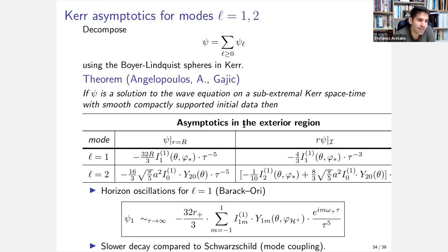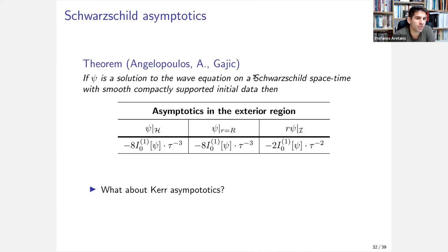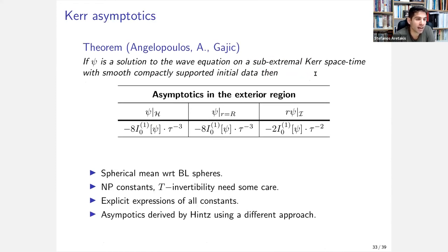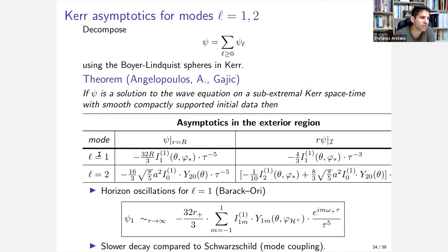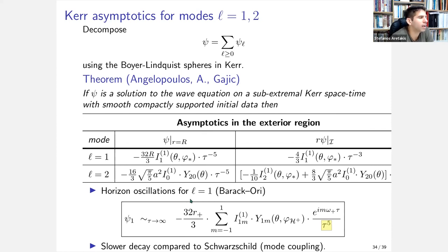In the asymptotics of the radiation field for the l=2 frequency, both the l=0 conservation law constant and the l=2 conservation law constant contribute — a coupling of conservation laws in the asymptotics. For the l=1 frequency along the null generators of the event horizon, one gets t⁻⁵ decay along with oscillations — horizon oscillations previously observed by Barack and Ori.